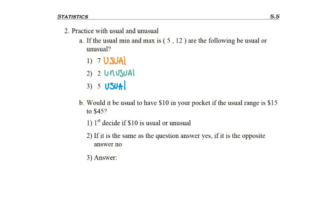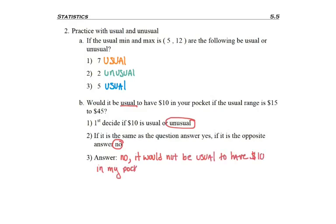Would it be usual to have ten dollars in your pocket if the usual range is fifteen to forty-five dollars? The question is asking specifically if ten dollars is usual. Ten is outside the range, so it's unusual. Because that's the opposite of what was asked, the answer starts with 'no.' A worded answer would be: no, it would not be usual to have ten dollars in your pocket, since ten dollars is below the usual minimum of fifteen dollars.